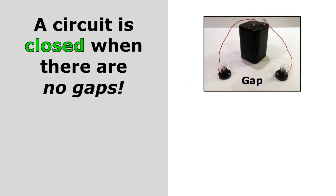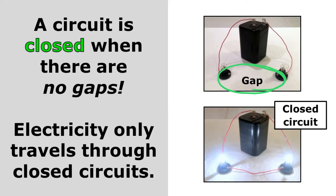Remember that circuits are closed conducting paths. A circuit is closed when there are no gaps. You can see in this diagram that there is a huge gap between those two light bulbs. Electricity only travels through closed circuits, so there can't be any gaps in the circuit for it to work.